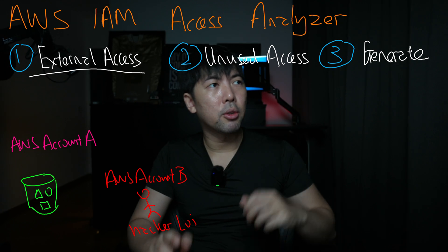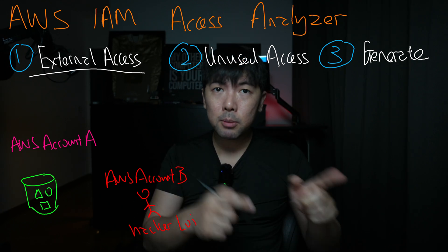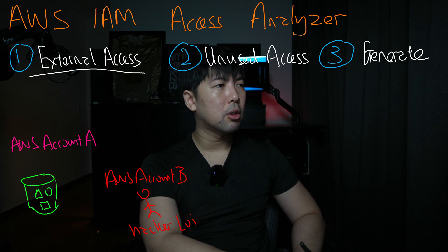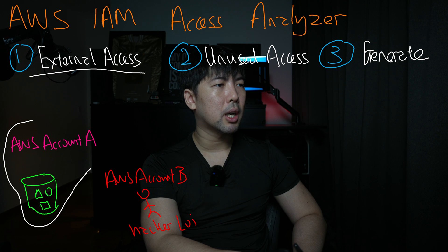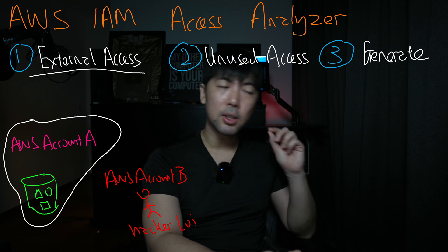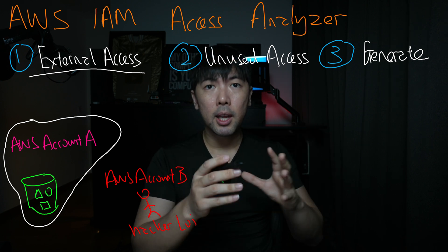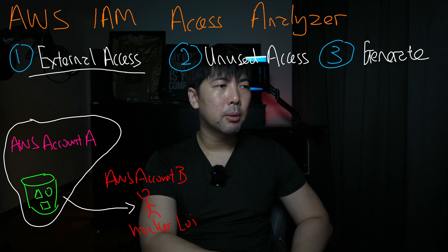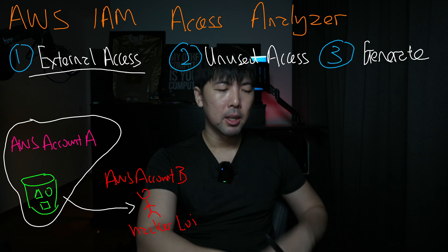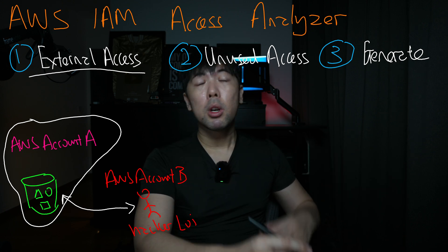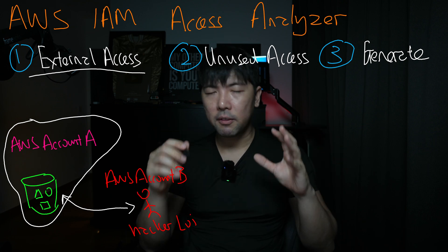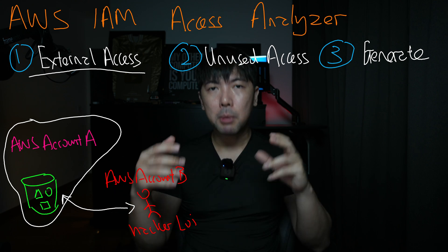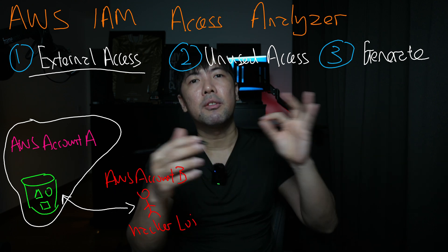Now there are three key parts to AWS IAM Access Analyzer. The first part is what we call external access. What external access means is, say for example, you have your own AWS account with numerous resources. In this instance, we have a specific S3 bucket, and this S3 bucket has been shared and made accessible to AWS account B. What you want to do is detect across all of your resources — specifically resources that have resource-based policies — which one has been made externally accessible outside of the AWS account.